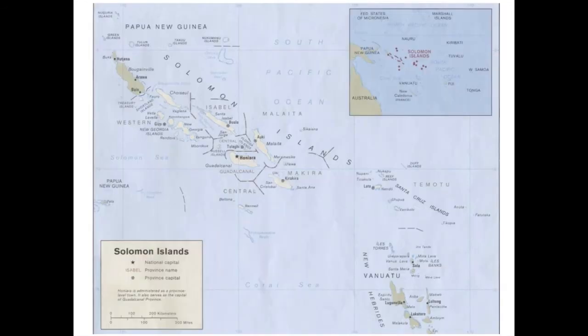The Solomon Islands are in the Pacific Ocean, about 1800 kilometers northeast of Australia. You can see their location on the map here.